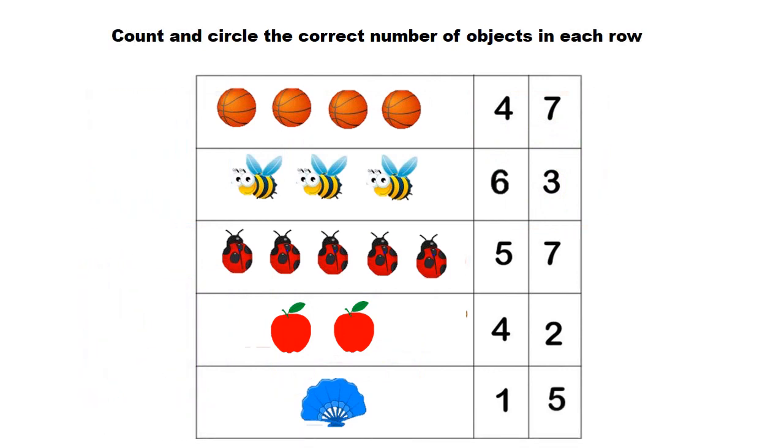Let's count and circle the correct number of objects. 1, 2, 3, 4. Correct! 1, 2, 3. Very good!